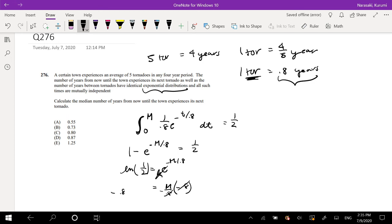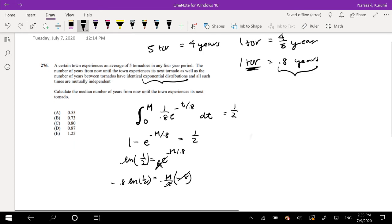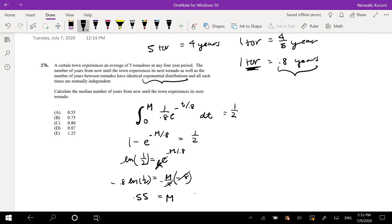Negative 0.8 natural log of 1 half, which is equal to 0.55, which is our answer A.